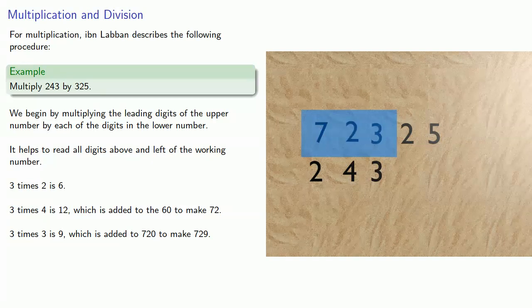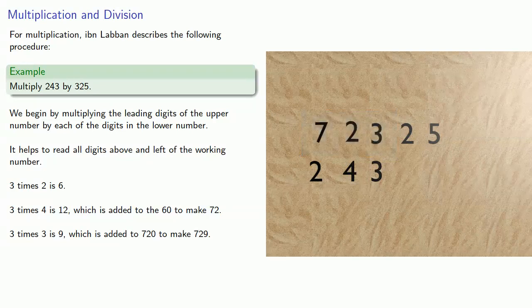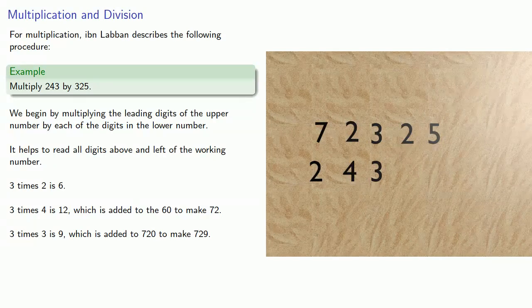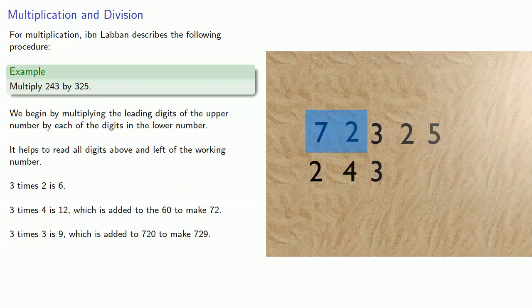Question in the back? Isn't it 723? That's a good question. Now, here's the thing you have to be careful with. The problem with using the dust board, as Ibn Laban is describing, is that there's not a clear distinction between your partial results and the numbers you're working with.